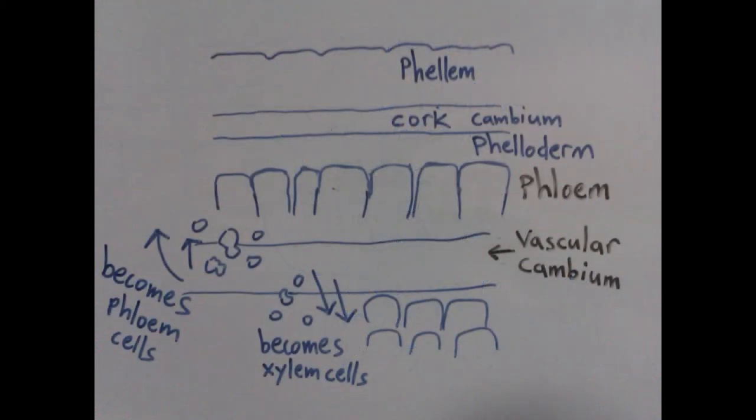The vascular cambium is similar to the cork cambium, and is also described as a lateral meristem, consisting of cells that are partially specialized or incompletely differentiated. As these cells divide and specialize, they can either become ray cells or phloem and xylem cells.